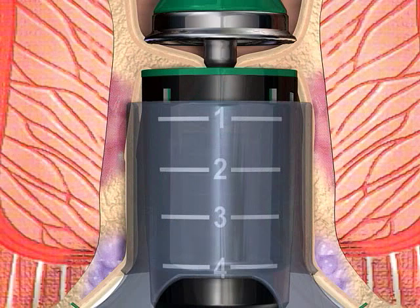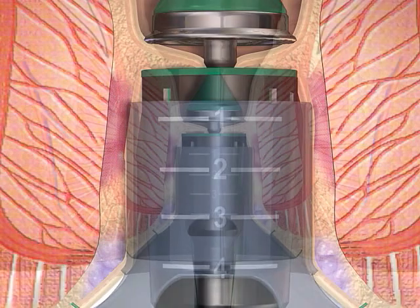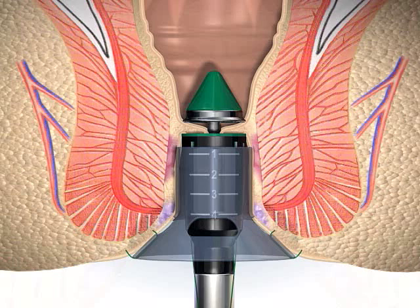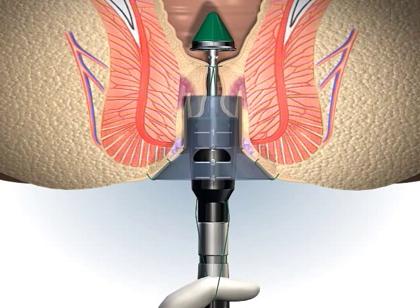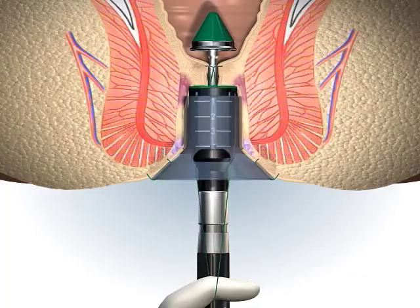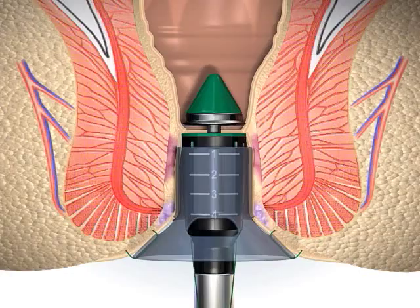The stapler is examined to ensure that it is aligned along the axis of the anal canal. Prior to firing, the stapler is then partially closed, advancing the staple housing into the anal canal.